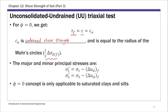The undrained shear strength is a very important strength parameter for clays. The major and minor principal stresses at failure in effective stress are basically total stress minus pore pressure at failure. It's also important to keep in mind that the φ equals zero condition — the property of the same deviator stress at failure regardless of σ3 — only applies to saturated clays. That's the undrained shear strength c_u and the UU triaxial test.